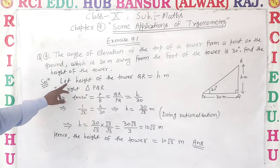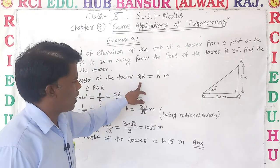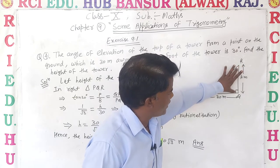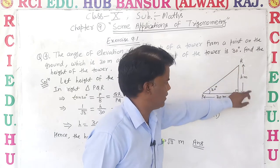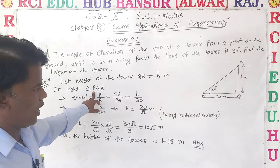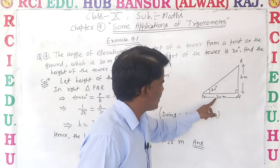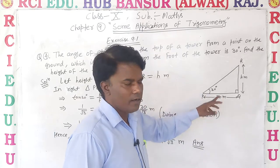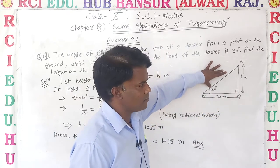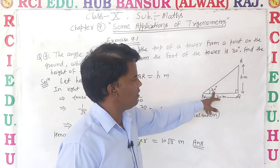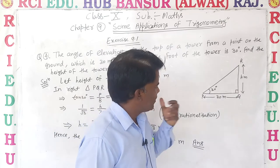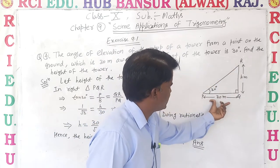Let the height of the tower QR be equal to h meters. We assume that the tower's height is h meters. In right triangle PQR, we know that the side opposite the 90-degree angle is the hypotenuse, the side opposite the given angle is the perpendicular, and the remaining side is the base.